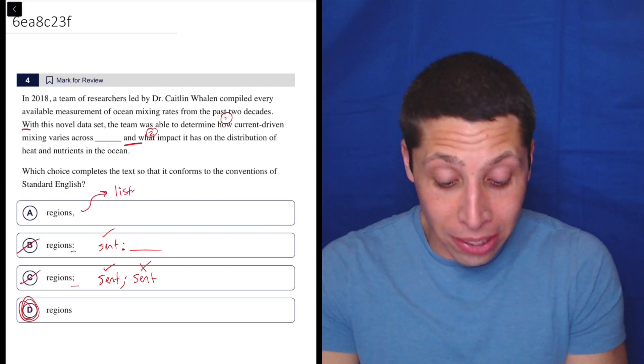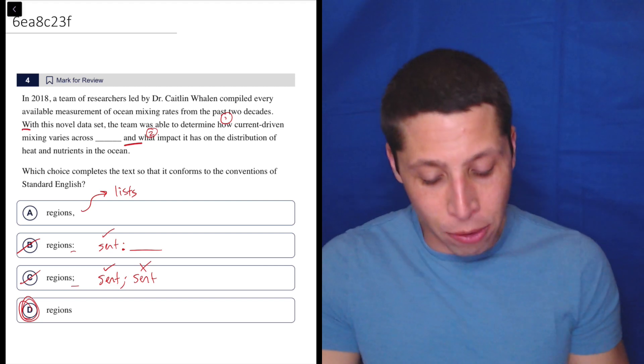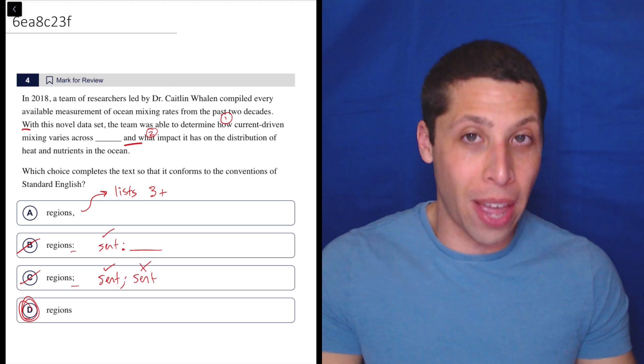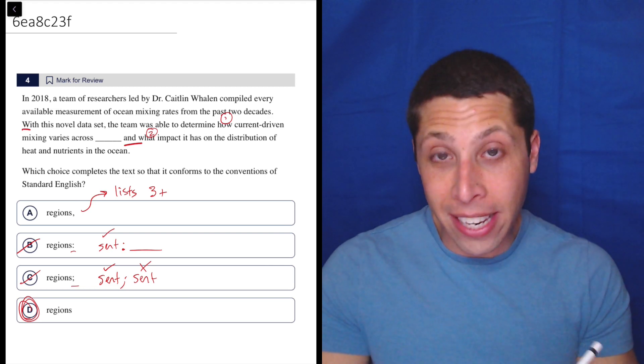So one of them is with lists. And we're kind of showing you we have a list here. So what gives? Well, it has to be a list of three or more things. If it's a list of two, it's not going to get a comma. And that's why D is right.